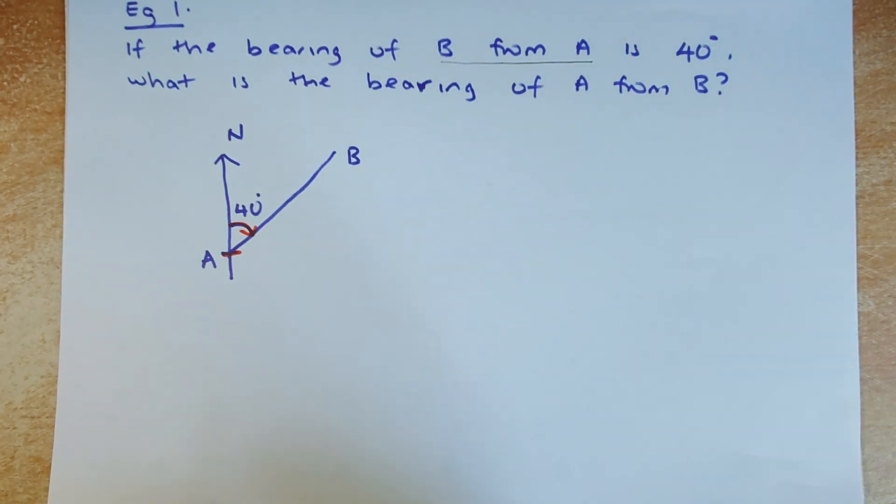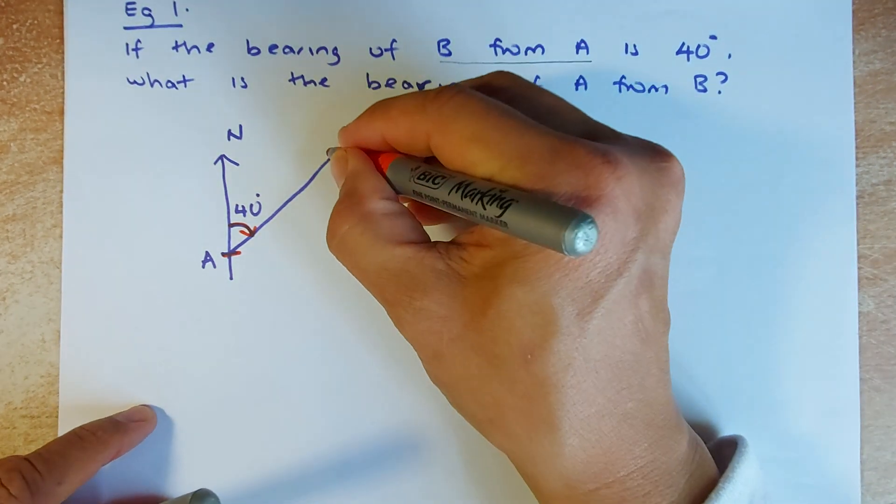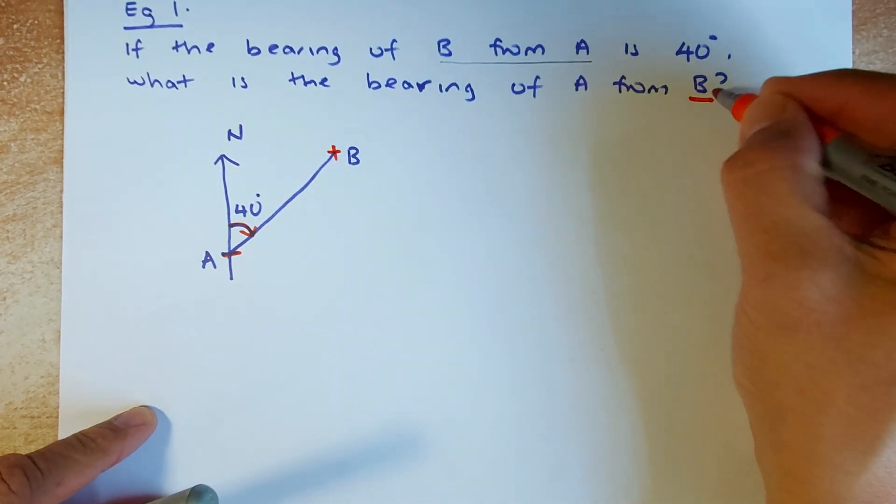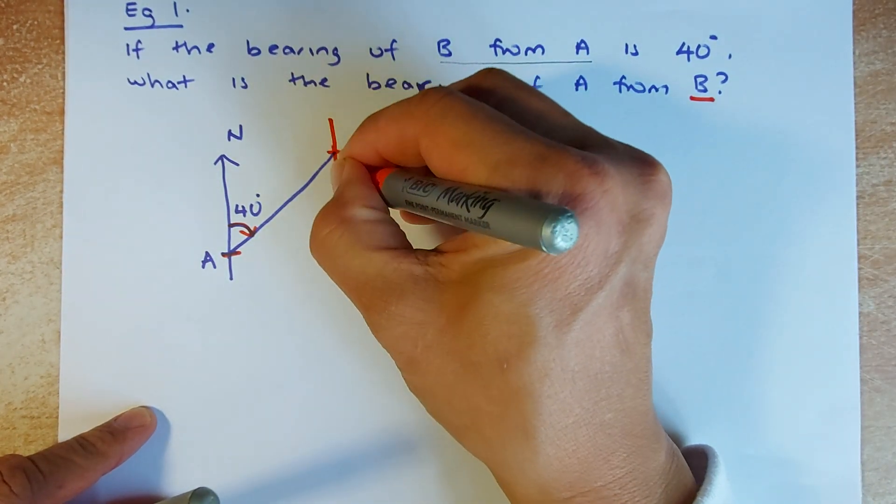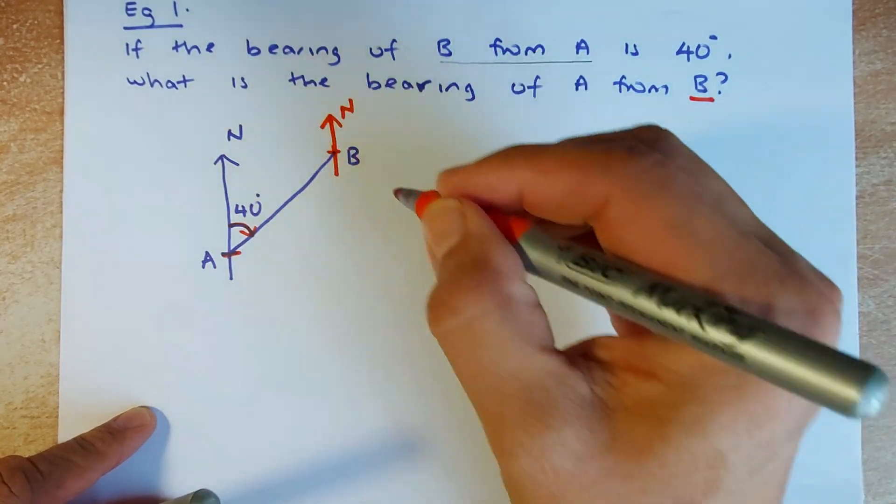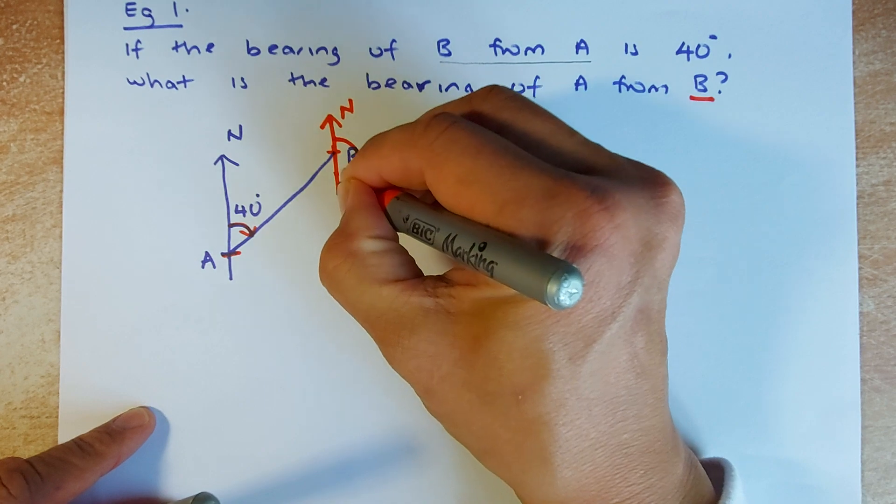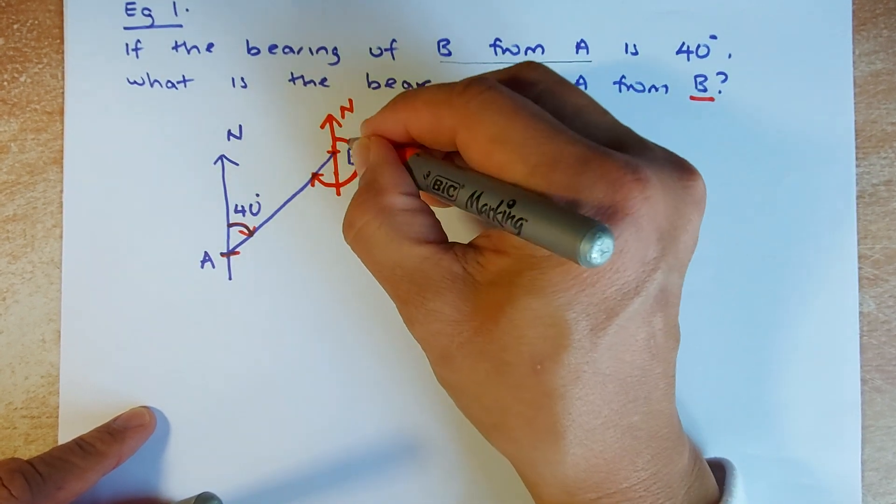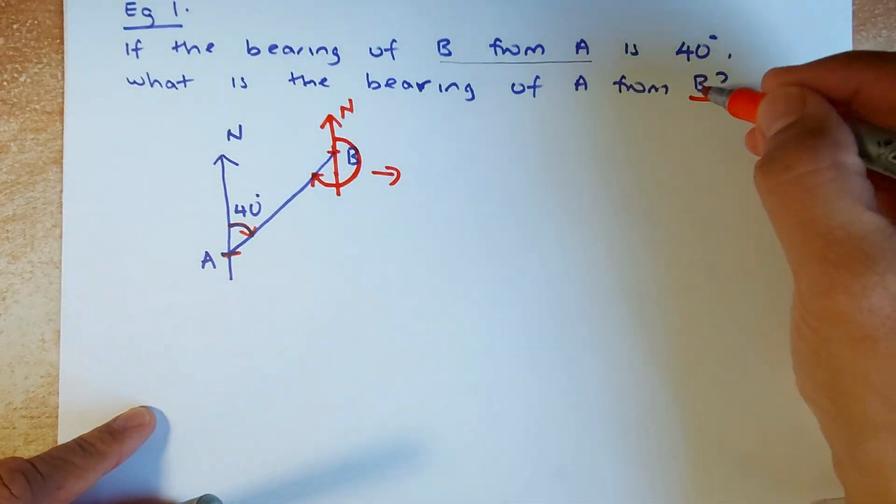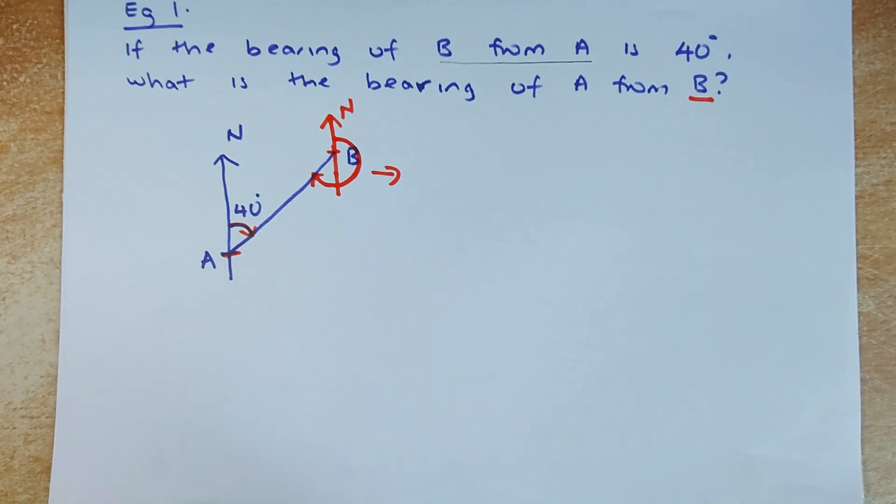Now you want to know the bearing on the other side, so you're going to start from B now. You need to draw a north. These two lines are parallel and you need to know the bearing from clockwise. You're going to measure the angle. That is called the bearing of A from B.